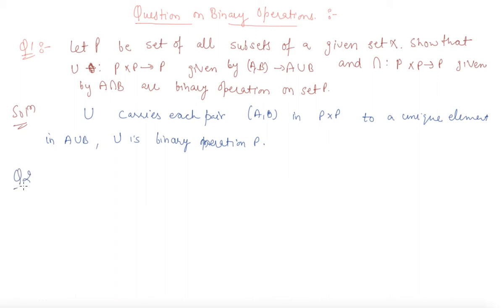Now let us discuss question number two. Show that *: R × R → R given by (A,B) → A + 4B² is a binary operation.